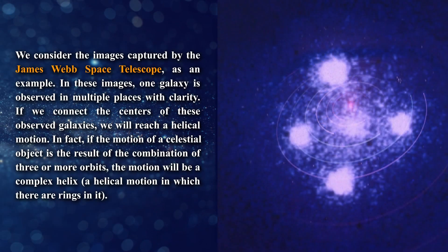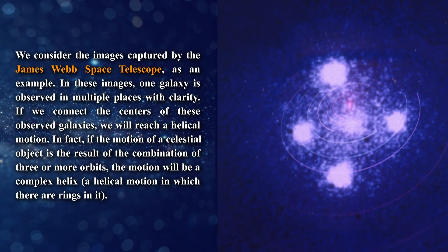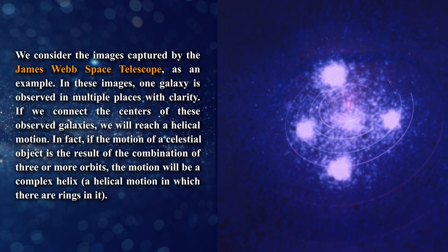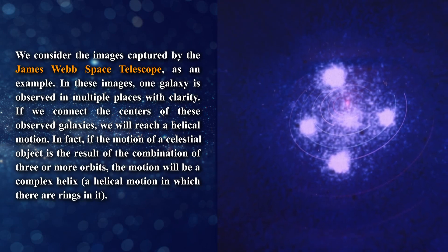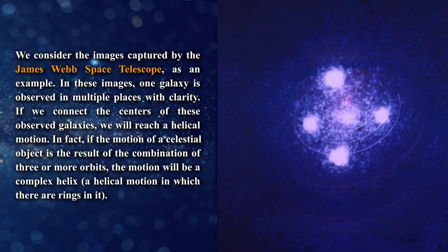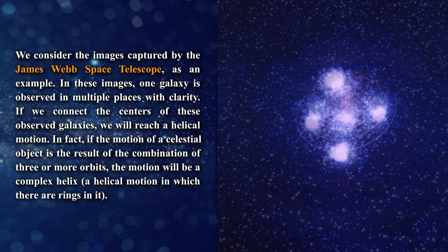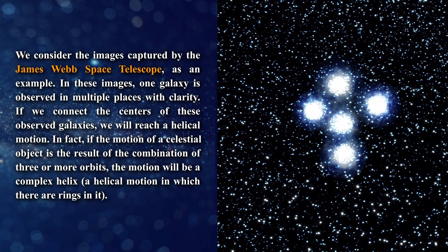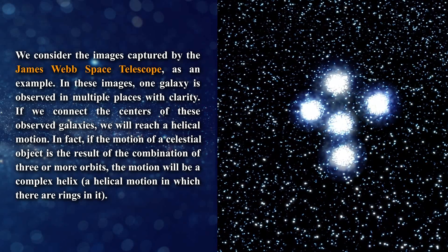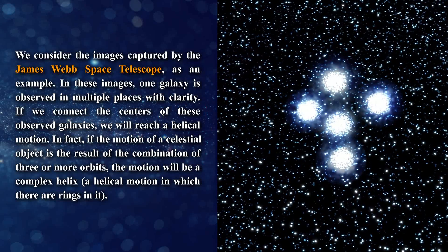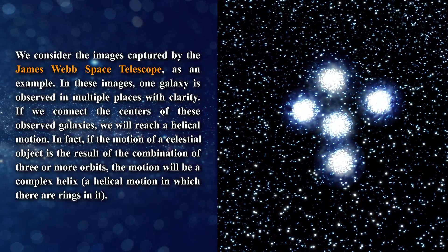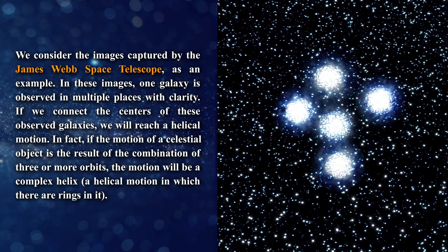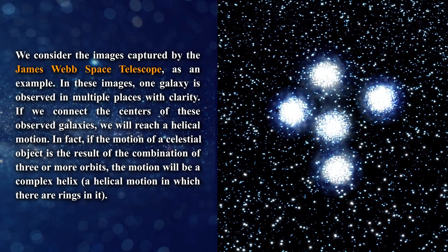We consider the images captured by the James Webb Space Telescope as an example. In these images, one galaxy is observed in multiple places with clarity. If we connect the centers of these observed galaxies, we will reach a helical motion. In fact, if the motion of the celestial object is the result of the combination of three or more orbits, the motion will be a complex helix, a helical motion in which there are rings in it.